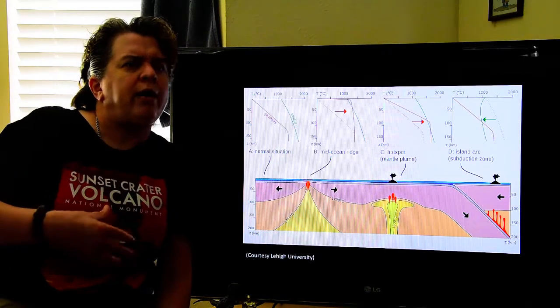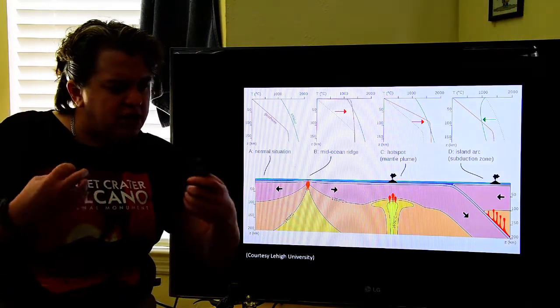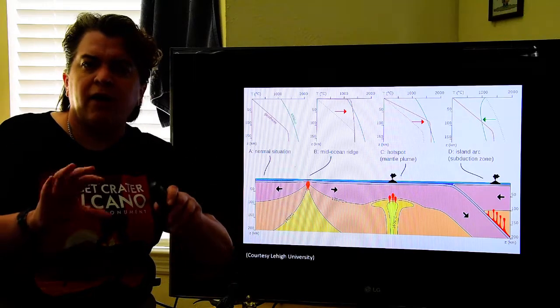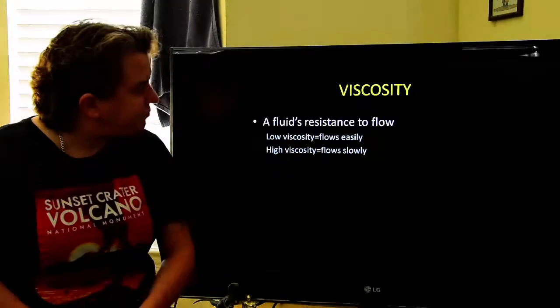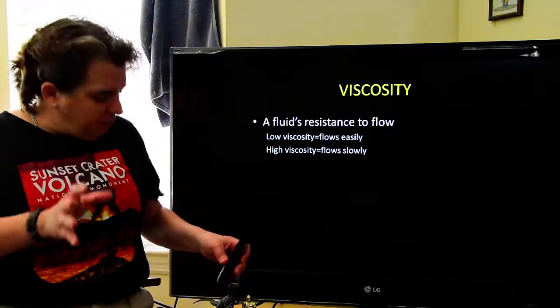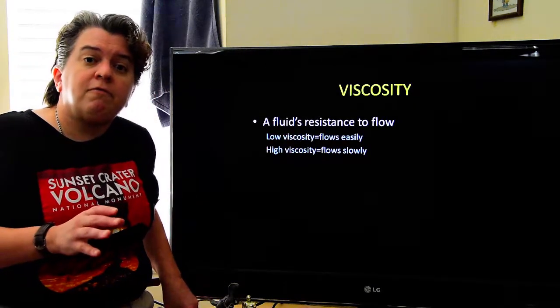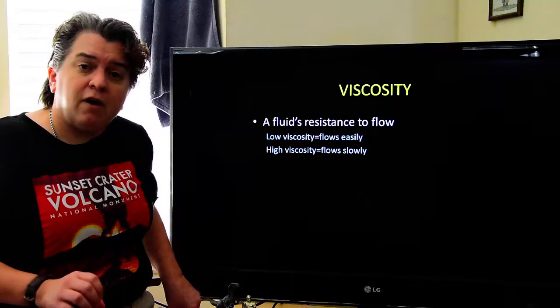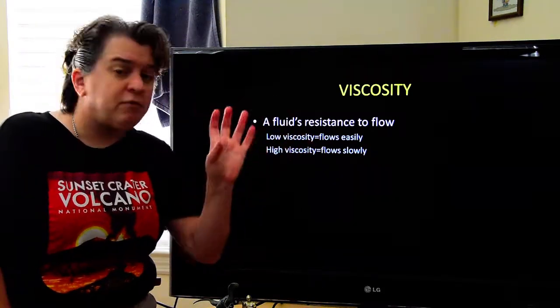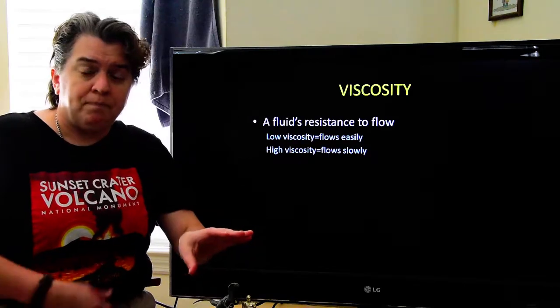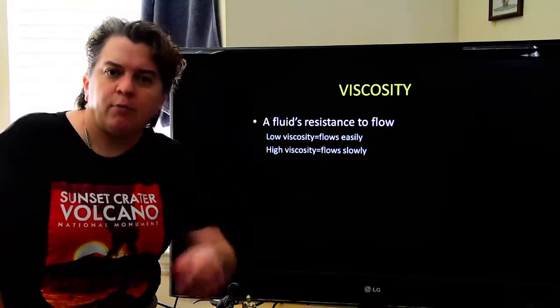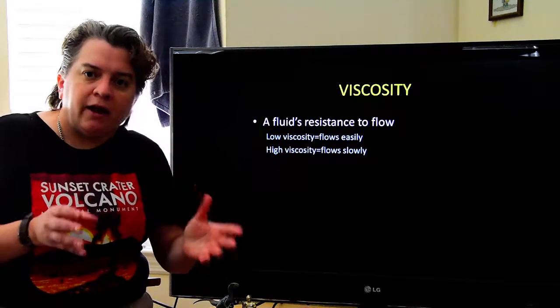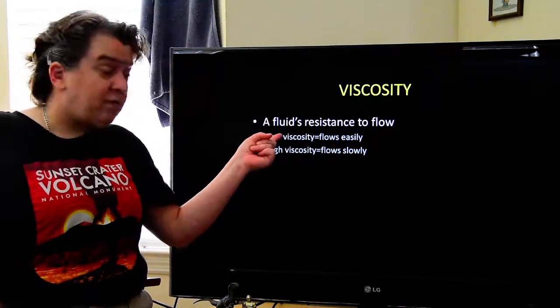Now that you have that nice little reminder about where we get volcanoes, let's think about why some of those volcanoes are dangerous and explosive, and other volcanoes are pretty calm. A lot of this goes down to something called viscosity. Viscosity is a fluid's resistance to flow. And lava, being a liquid, or magma when it's underground, is a liquid. And a liquid is a fluid.